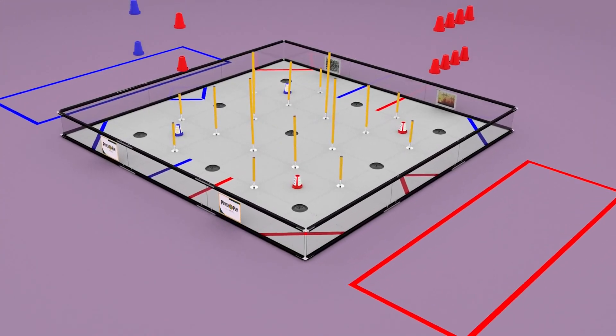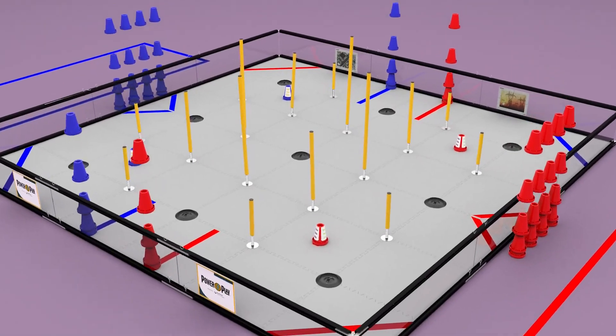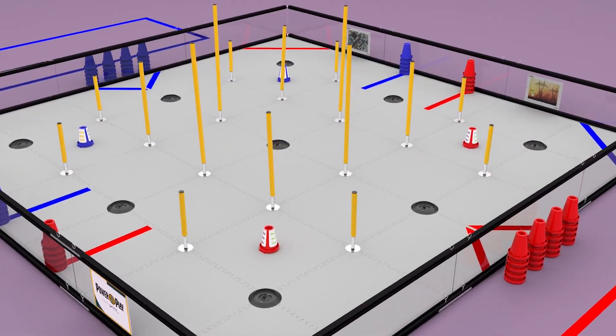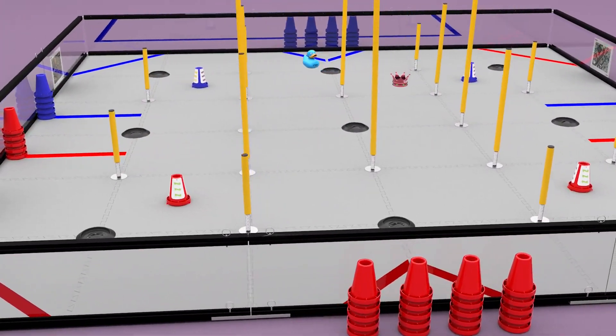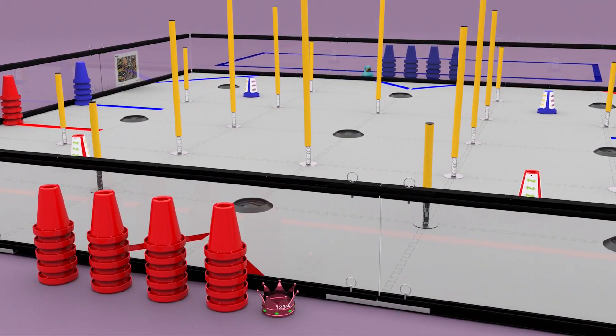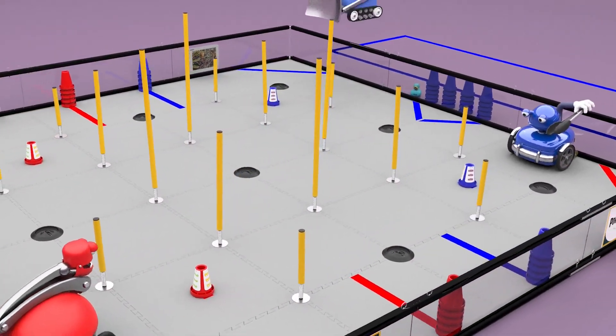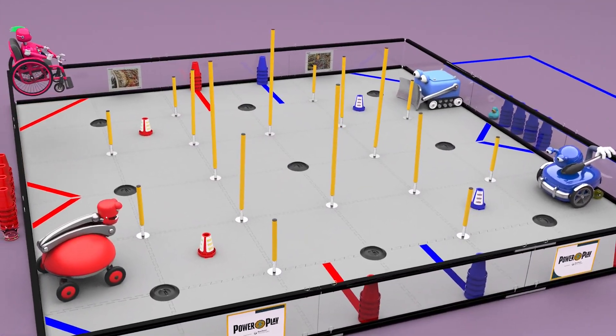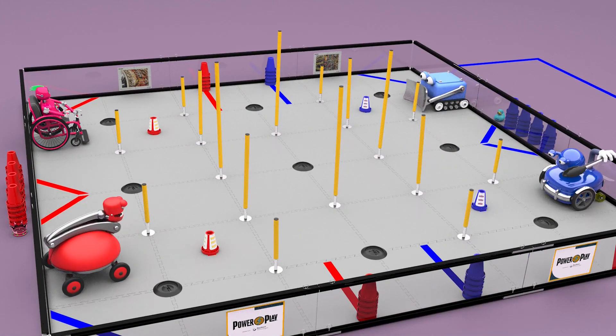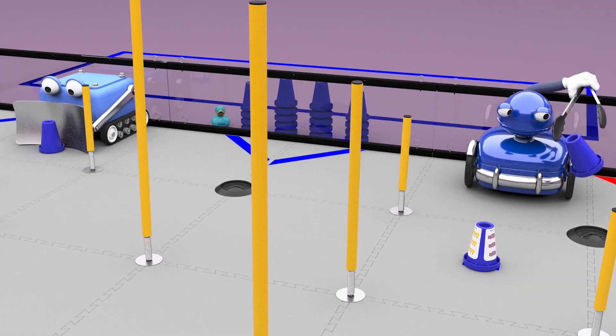Before each match, cones are stacked in the substation storage areas and inside the playing fields. Custom beacons are also placed in the substation storage areas. Teams place their robots on the field, touching the wall between the substation and terminals. Each team may preload one cone into their robot.